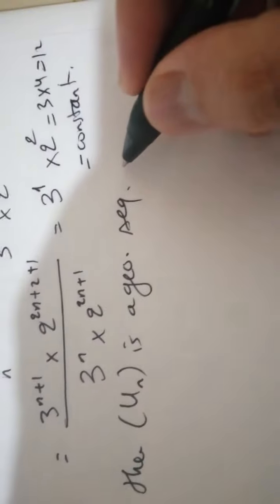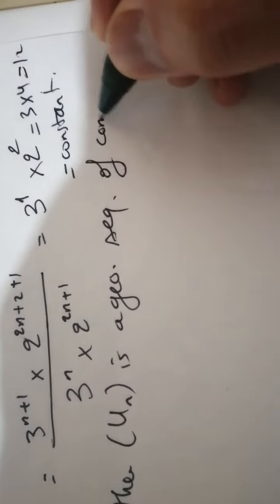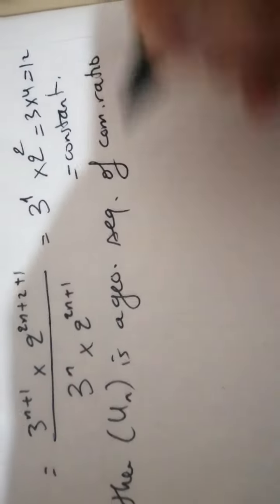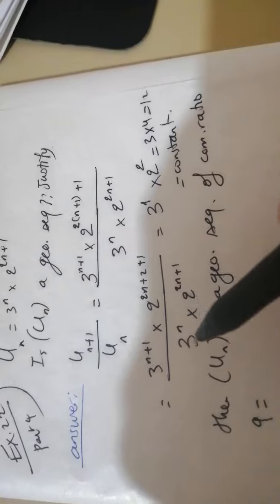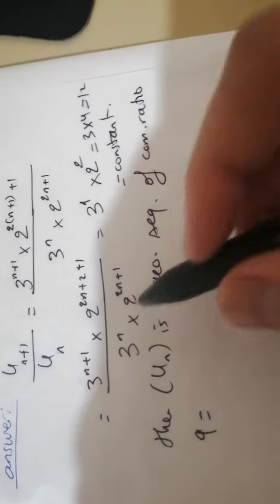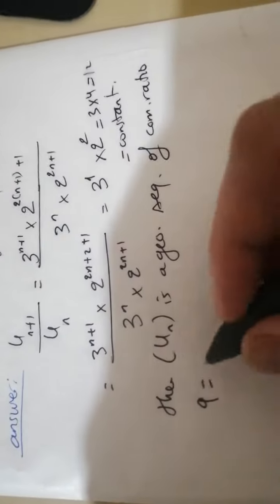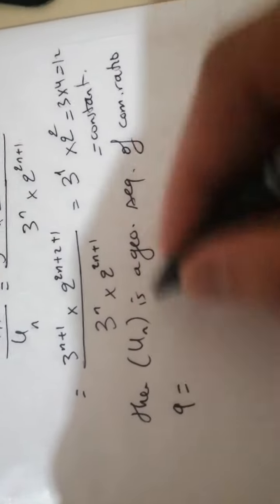If it is a geometric sequence of common ratio Q, how much is the common ratio? The common ratio comes from division, UN plus 1 over UN, equal 12.